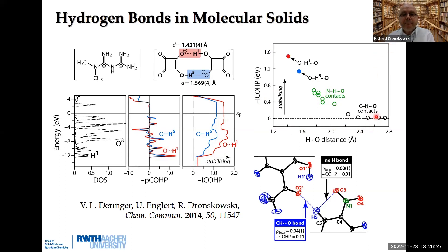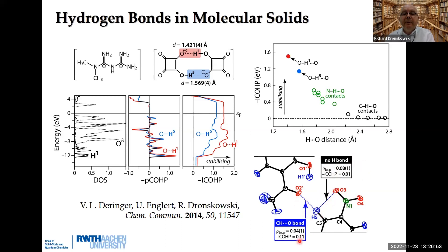This is a method that works. Sometimes people use Bader's atoms-in-molecules method, looking for bond critical points. But sometimes this theory fails — you find a high bond critical point where there is no hydrogen bonding. Bader's theory is based on the density, not on the wave function. If you base the analysis on orbitals and wave functions using LOBSTER, you'll find the right solution.